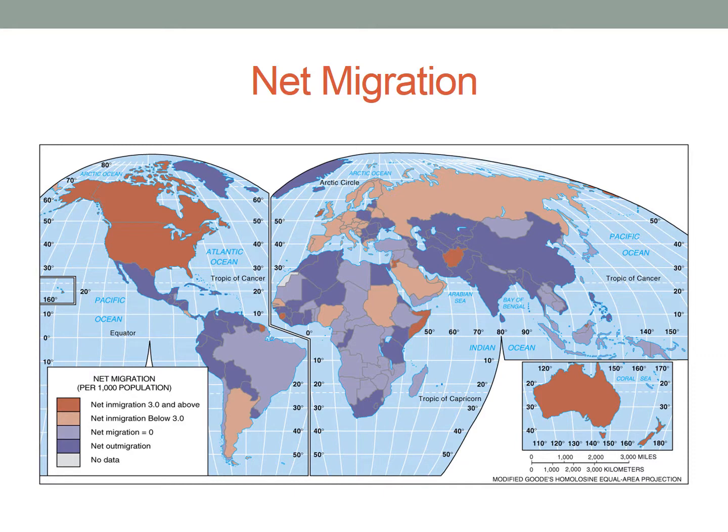There are some exceptions. Countries like Somalia, Sudan, and Afghanistan show varying degrees of in-migration. These areas have experienced prolonged conflict, which likely forced people to leave as refugees. When that conflict ends, people often return home — a process we call repatriation. So what we're probably seeing on this map is the repatriation of refugees who previously left and are now returning home.